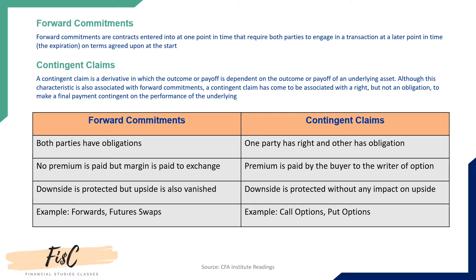Since there is no right in forward commitments, nobody pays premium to each other. In a contingent claim, the party which has the right pays a premium to the party which has the obligation. In forward commitments, the upside is given up because both parties are protecting the downside, whereas in contingent claims the downside is protected without impacting the upside, and to protect the downside a premium is paid. Examples of forward commitments are forwards, futures, and swaps, while contingent claims include call options and put options.